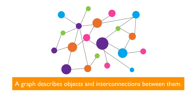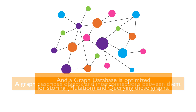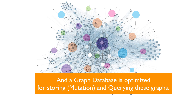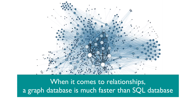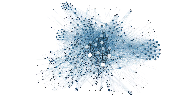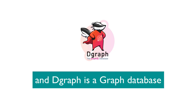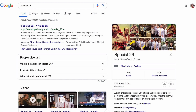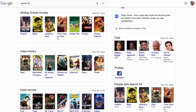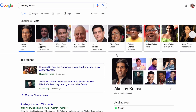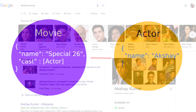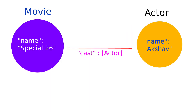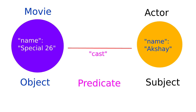A graph describes objects and interconnections between them, and a graph database is optimized for storing and querying these graphs. When it comes to relationships, a graph database is much faster than a SQL database. For example, we have a movie called Special 26, and Akshay Kumar is a cast member — the movie is an object, has a predicate 'cast', and the subject is Akshay Kumar.